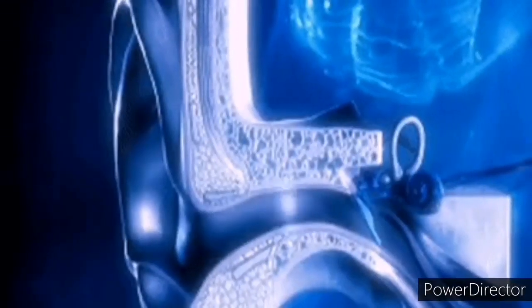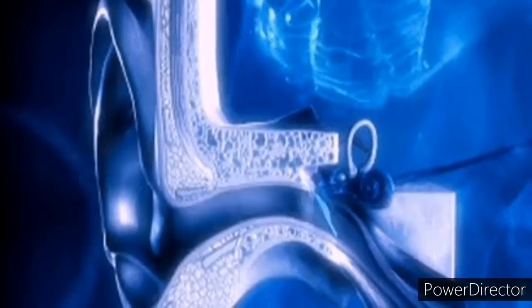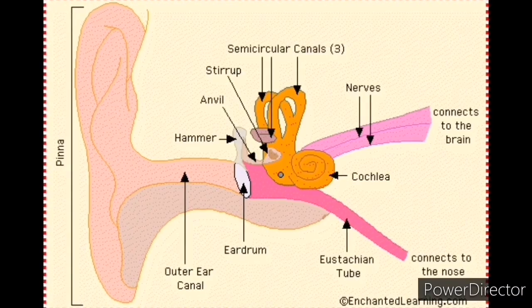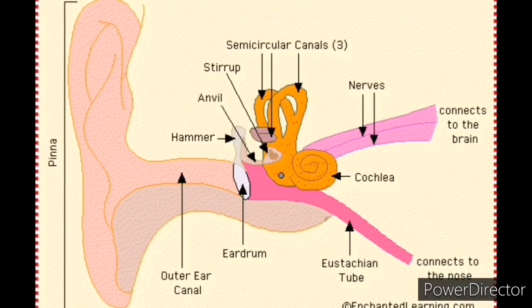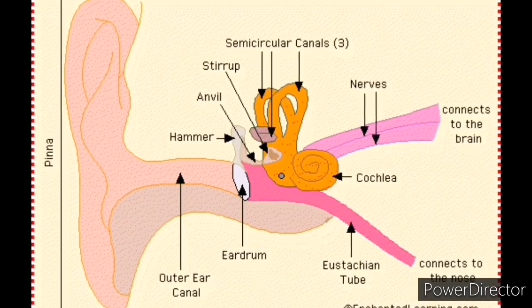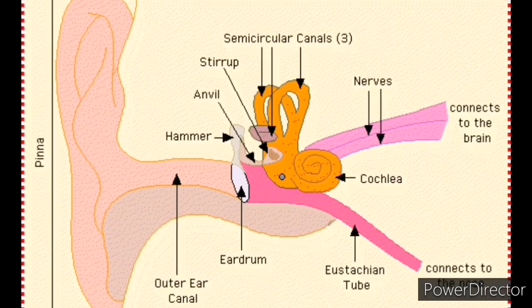The middle ear is the part of the ear between the eardrum and the oval window. The middle ear transmits sound from the outer ear to the inner ear. The middle ear consists of three bones: the hammer, the anvil and the stirrup.